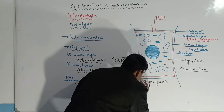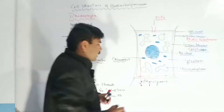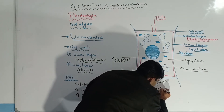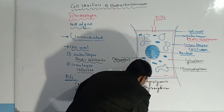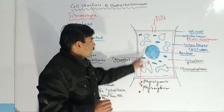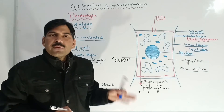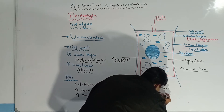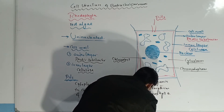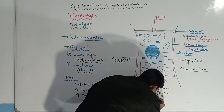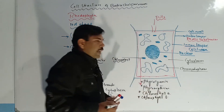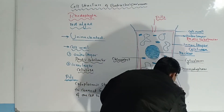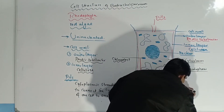The next pigment present in these chloroplasts is phycoerythrin. The next pigments present are chlorophyll A as well as chlorophyll B. Carotenes are also present in these chloroplasts.